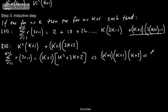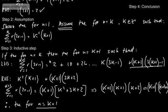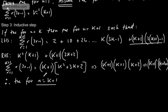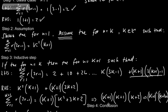Therefore, the sum from r equals 1 to k plus 1 equals (k plus 1) squared times (k plus 2), which we can also write as (k plus 1) squared times (k plus 1 plus 1). This matches the required form n squared(n plus 1) with n replaced by k plus 1, so we have shown true for n equals k plus 1. All we need to do now is write down our conclusion.